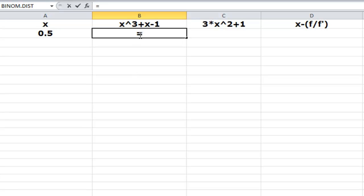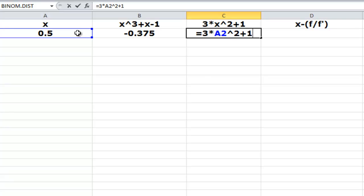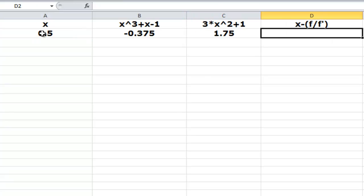Here I have 0.5. And after that, I'm going to do the calculations by using the cells so that we can have it for a variable. So here is my x cube, then I have my x minus 1. We get this value. Then 3 times a2, because that's what our x is at the moment, squared plus 1.